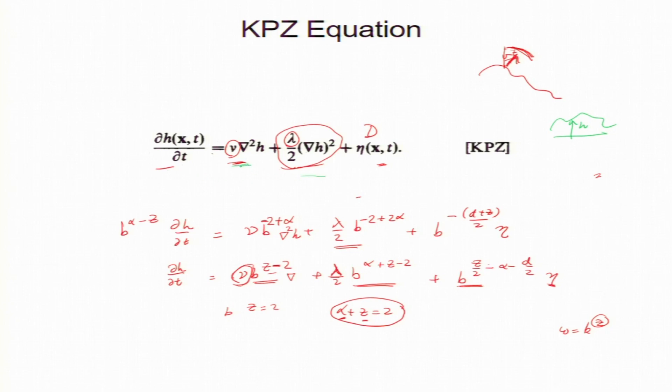Now, it has a diffusion term, it has a non-linear term, it has a noise term and noise is delta correlated. So, that noise which I have written here. So, delta correlated in space and time.